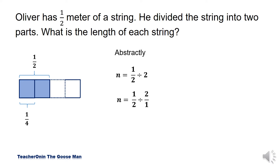Then after that, I'll reciprocate two over one. When I say reciprocate, meaning I'll interchange the numerator and denominator. For instance, if I have two over one, I'll interchange the numerator and denominator — so one will be my numerator and two as my denominator.